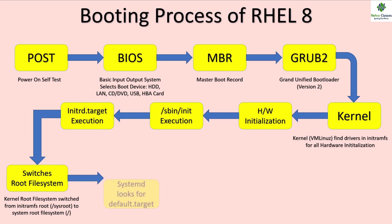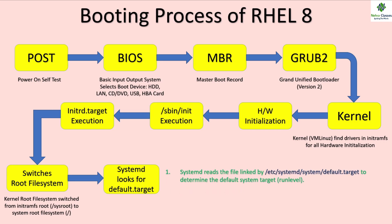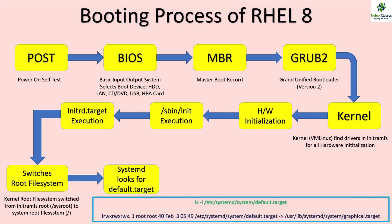After that, systemd looks for the default target. This file decides the run level to boot up the machine. The location of the file is /etc/systemd/system/default.target. systemd reads the file linked by /etc/systemd/system/default.target to determine the default system target or run level. Run levels are also called targets in RHEL 8. If you execute the ls -l command for the same, you will find that it is a soft link to the graphical.target file located in /usr/lib/systemd/system directory.